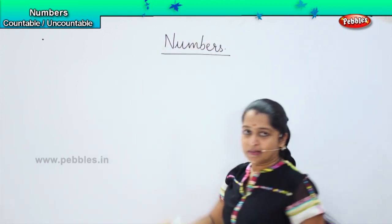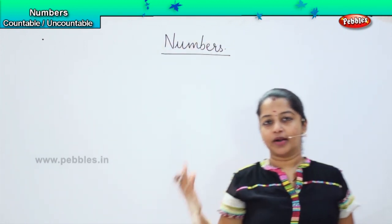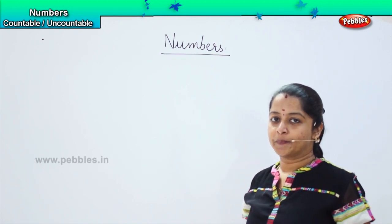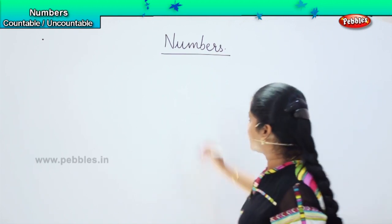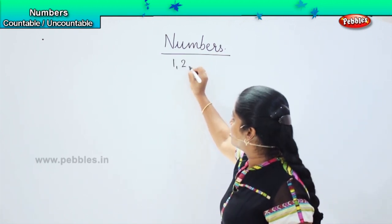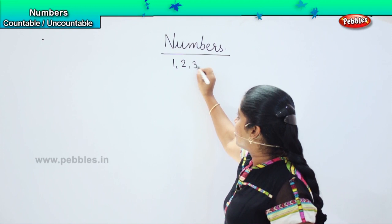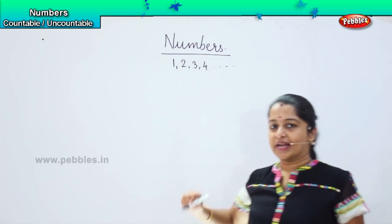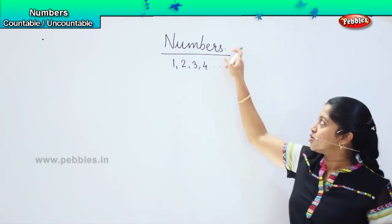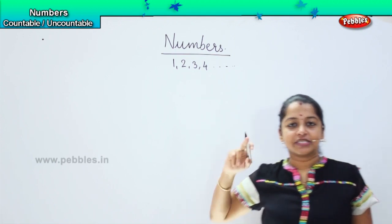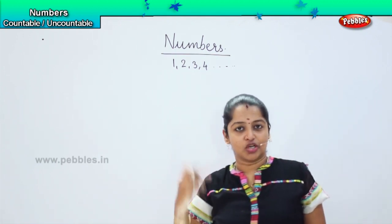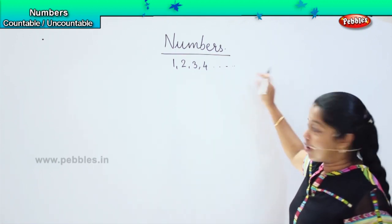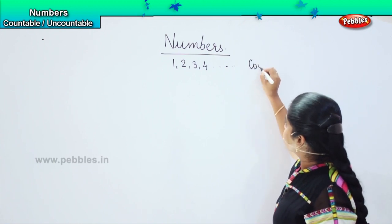So what do you mean by numbers? When I say the word number, what is the first thing that strikes in your mind? It is the digits — one, two, three, four and so on. So whenever you hear the word numbers, this is the first thing which strikes your mind. So these are called countable numbers.